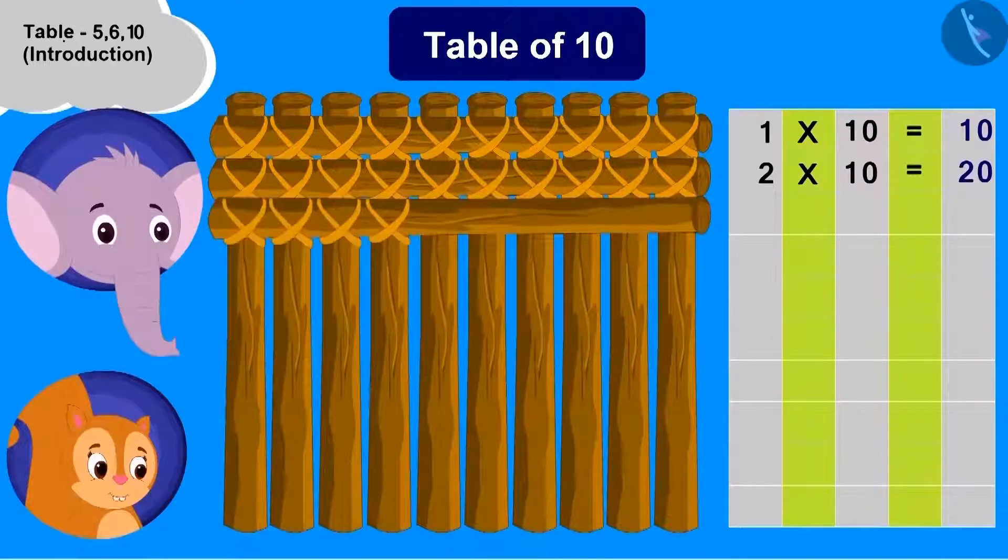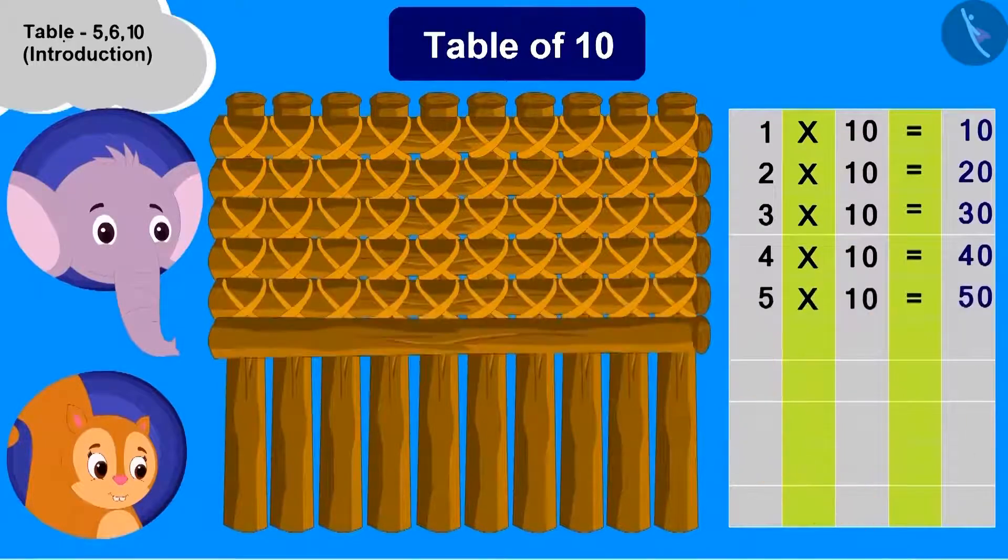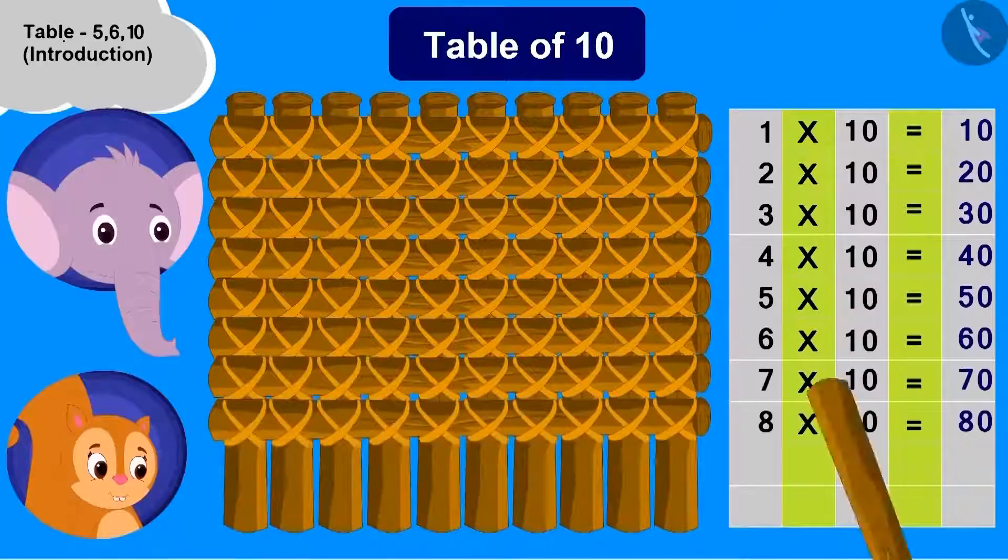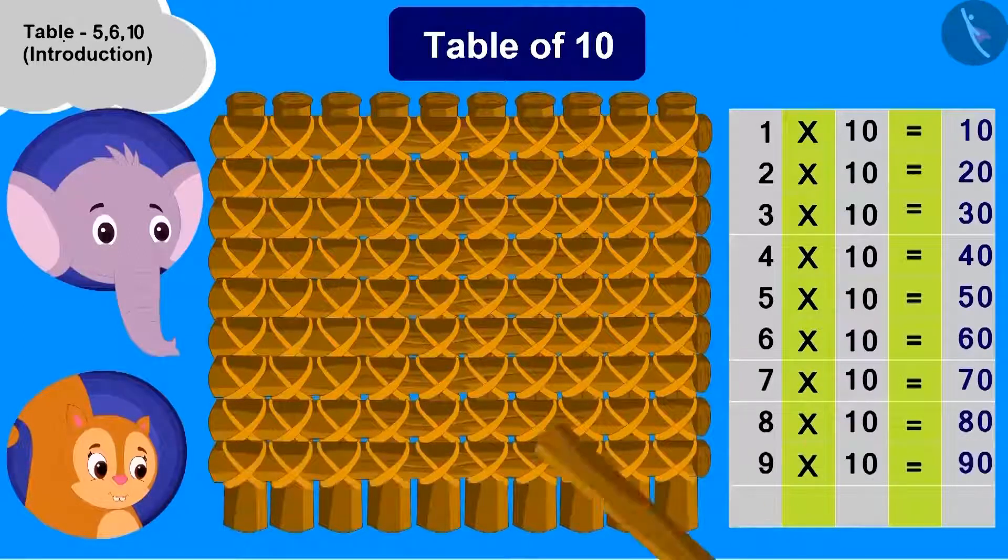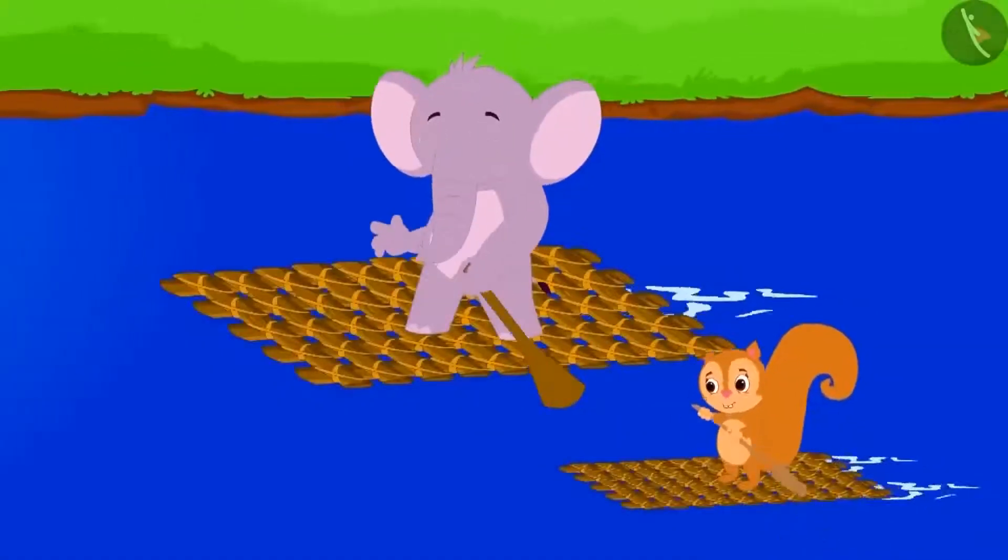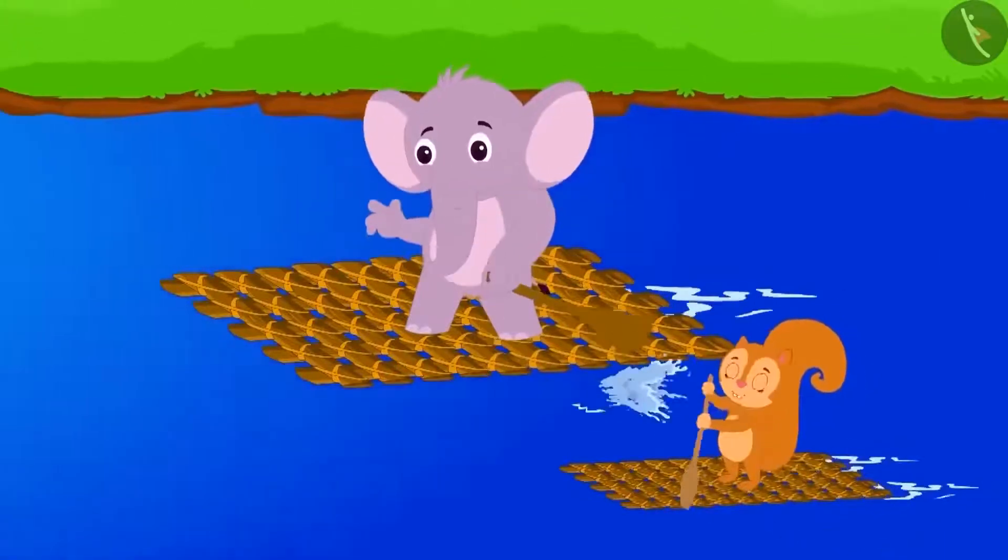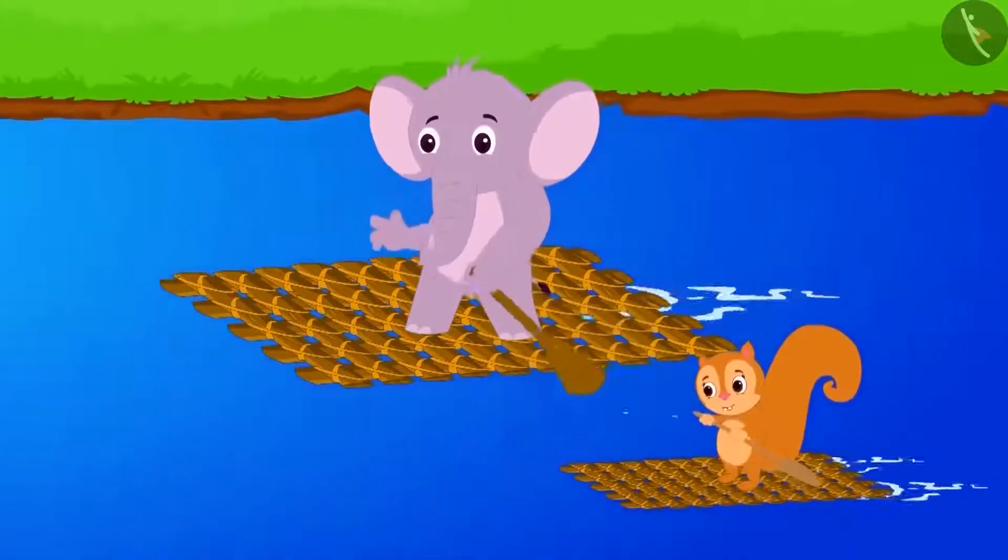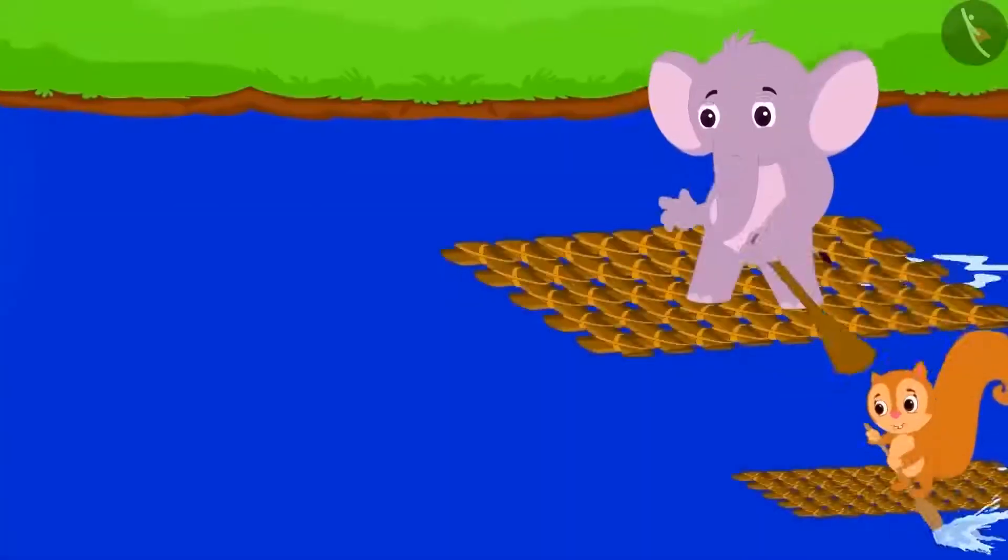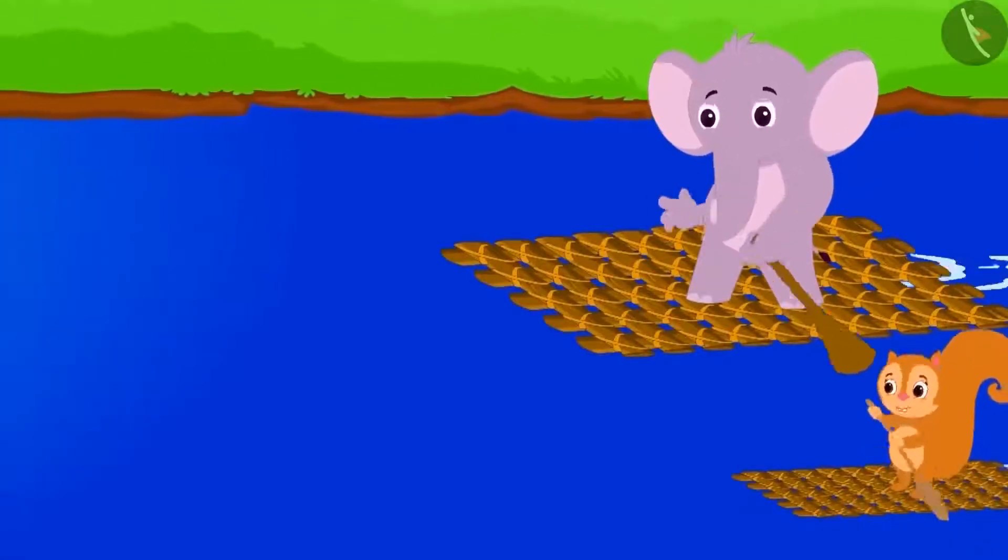Chanda added woods just like us and built the table of 10 like this. And Appu's boat is ready. Now, Chanda and Appu both sailed their boats on the river and started for their homes humming the table of 10. Come children, let's repeat the table of 10 with them.